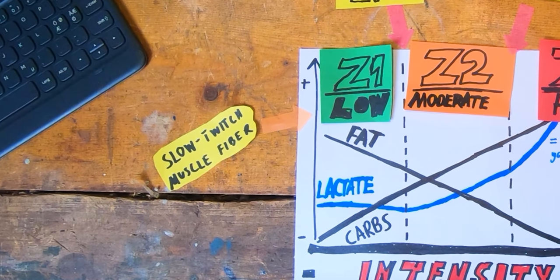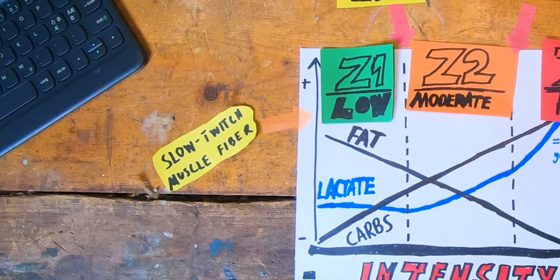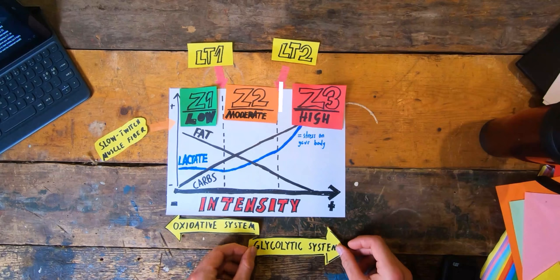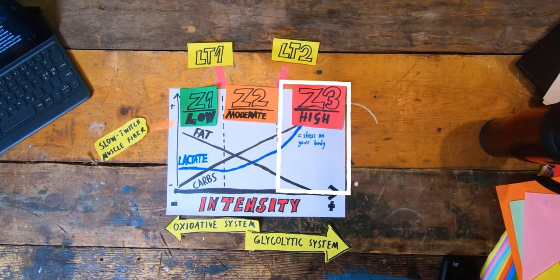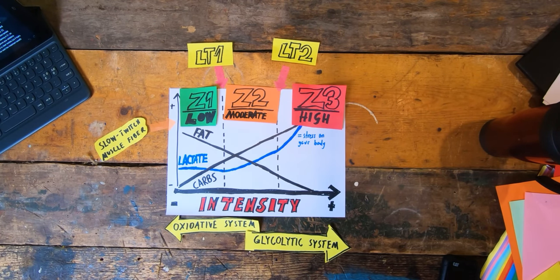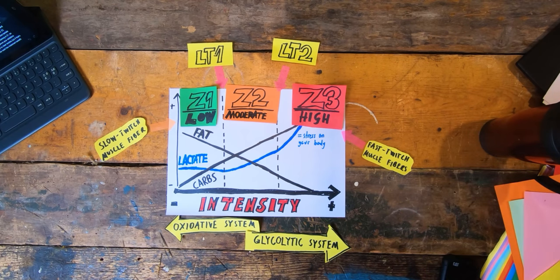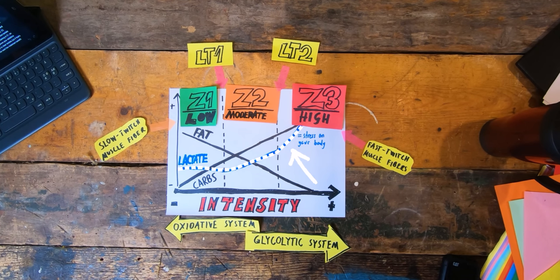Training in zone one also strengthens your slow-twitch muscle fibers, which you need for long sustained efforts. On the far right, training with high intensity in zone three is a good zone for developing your glycolytic system — in other words, improving your body's ability to use carbs as an energy source.